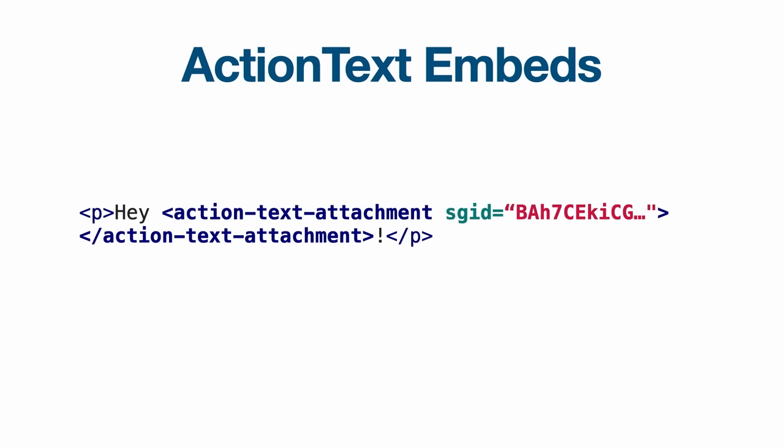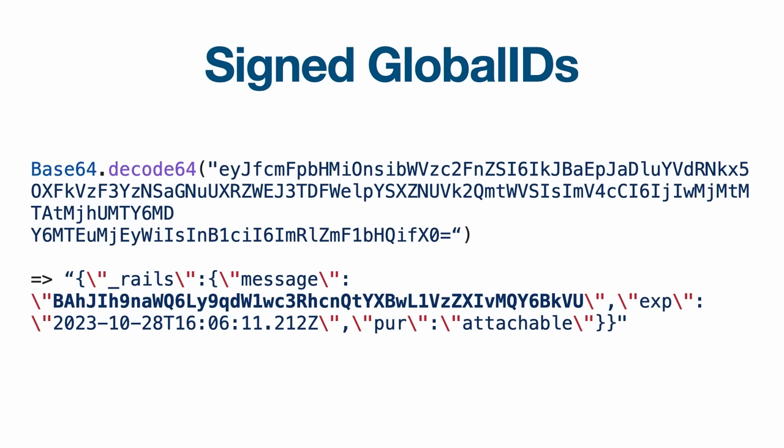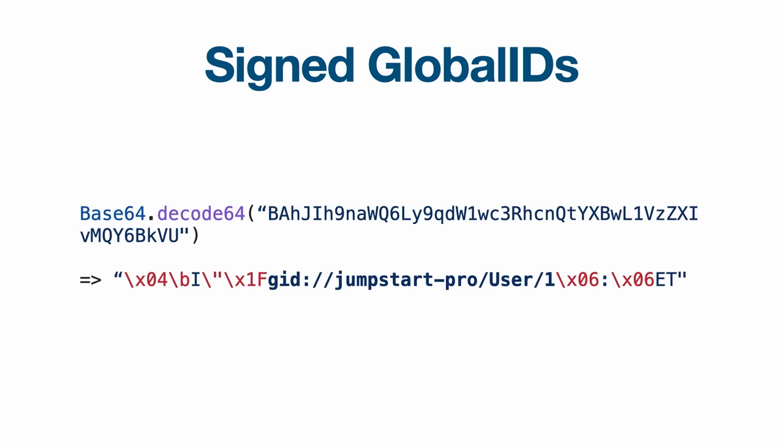On the back end when we save, we don't save any of the HTML for the avatar or name. We just have an action text attachment with an SGID, which tells Rails how to find the record and render it again for display. The signed global IDs are simpler than they look — they're just base64 encoded JSON. When decoded, you get a JSON message with an expiration and a purpose. The purpose prevents malicious reuse, and both help with security. The Rails message is also base64 encoded — when decoded you can see it references a specific model and record ID.